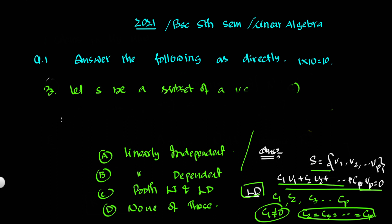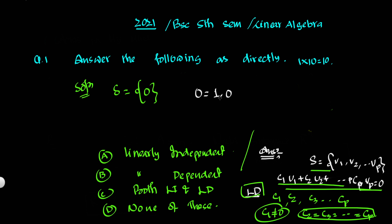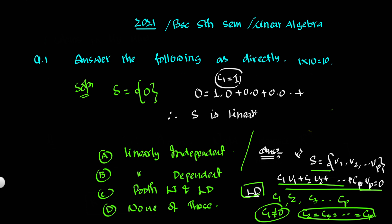If we observe this set containing only the zero vector, then zero vector is a linear combination with at least one non-zero scalar — suppose c₁ is 1 and the rest are 0. So we have at least one scalar giving a linear combination equal to zero. According to the definition of linearly dependent, S is linearly dependent.